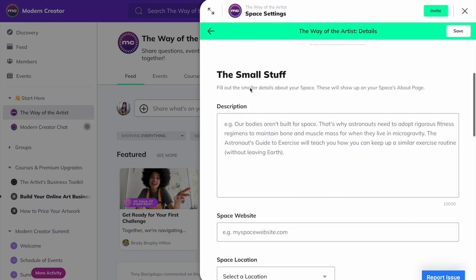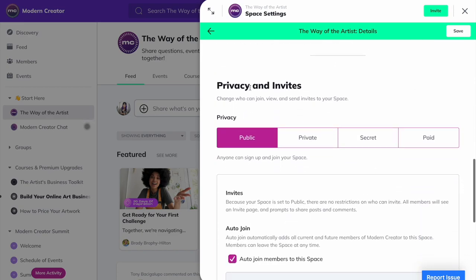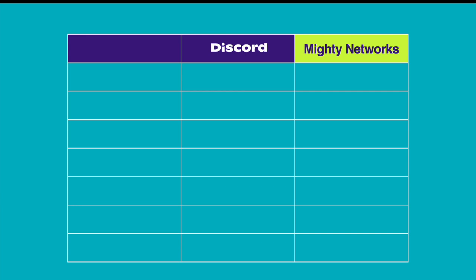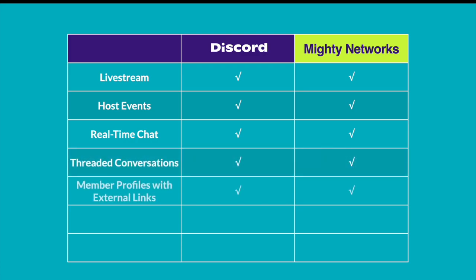When it comes to privacy and access, you can set each space to be public, private, secret, paid, or even token-gated. Next, let's talk about what you and your members can do. Both Discord and Mighty Networks help you bring like-minded people together. Both platforms have similar capabilities, like being able to livestream, host events, chat in real time, have threaded conversations, create member profiles with external links, and send and receive direct messages. You can also upload video files to both platforms, but there's a big difference when it comes to file size.